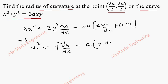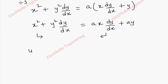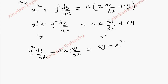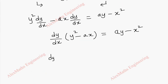Then x dy by dx plus y. Let's multiply a inside, so ax into dy by dx plus ay. And the other side we have these two terms as it is. Now we are going to group dy by dx — we bring one term here and take the rest to the other side. So y square into dy by dx minus ax dy by dx equals ay minus x square. We take dy by dx common, so y square minus ax equals ay minus x square.